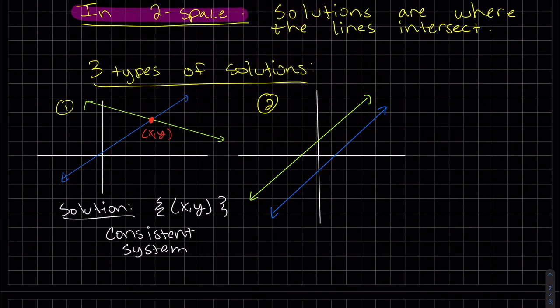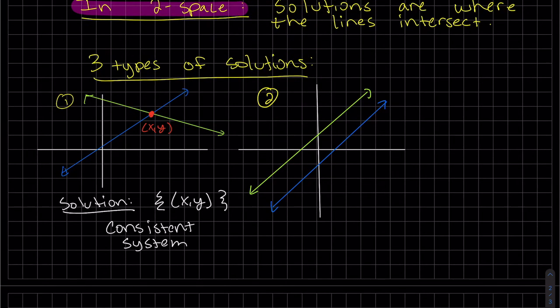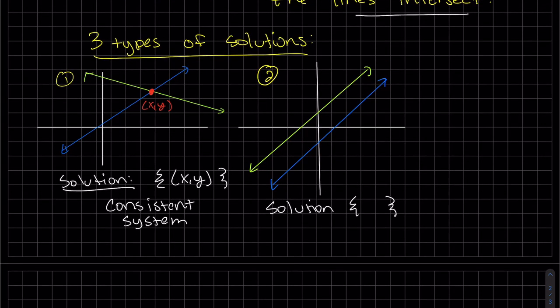The second thing that can happen is we have two lines that are parallel. And we can see the solutions are where the lines intersect. Parallel lines never intersect. So my solution is the empty set. And this is inconsistent.